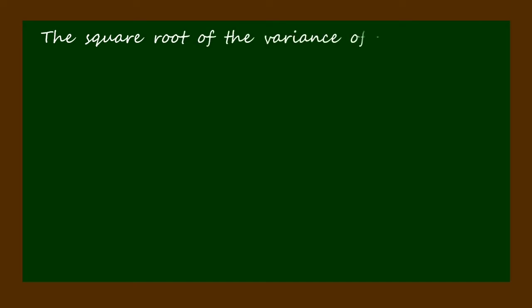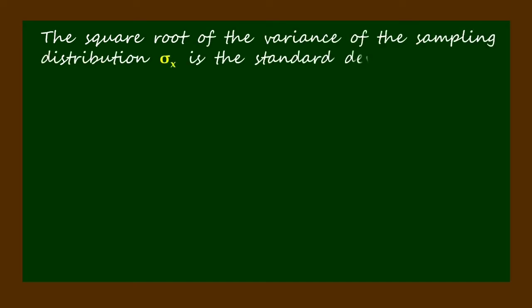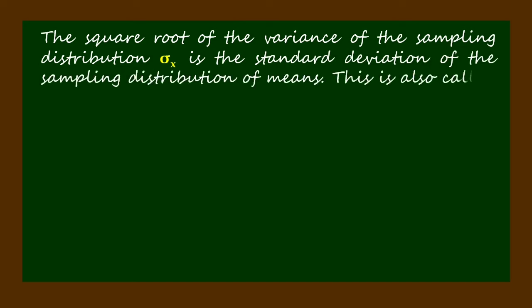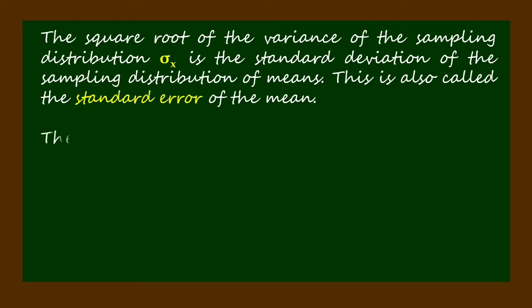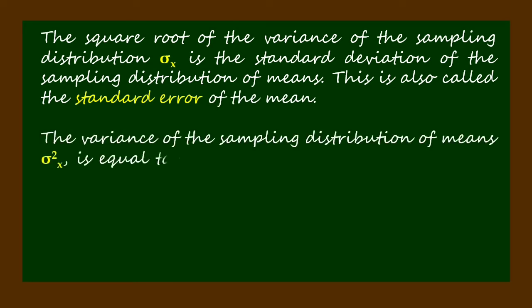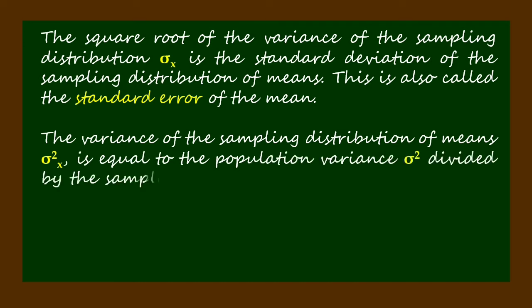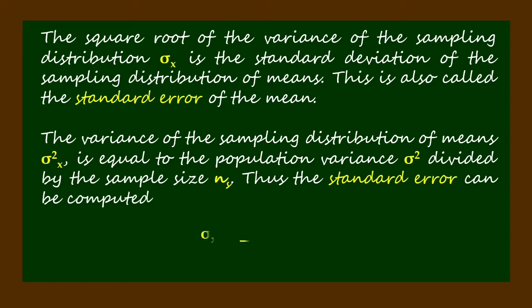The square root of the variance of the sampling distribution of means sigma squared sub x is the standard deviation of the sampling distribution of means. This is also called the standard error of the mean. The variance of the sampling distribution of means sigma squared sub x is equal to the population variance sigma squared divided by the sample size n sub s. Thus, the standard error can be computed by using the following formula.